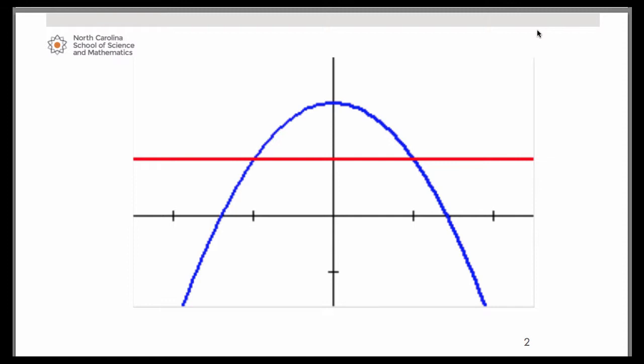You can see in blue the upside-down parabola that is the function f(x) equals 2 minus x squared and the red line is the line y equals 1. That also is our axis of revolution.